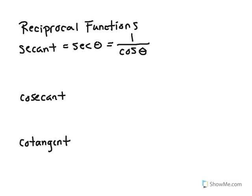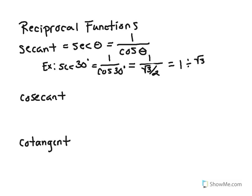For example, the secant of 30 degrees. I would do one over the cosine of 30 degrees, which, if you've been studying, you should know that to be the square root of three over two. I'm going to write out one divided by the square root of three over two. Go ahead and take care of this. You should get two over the square root of three.